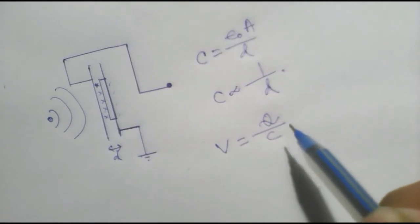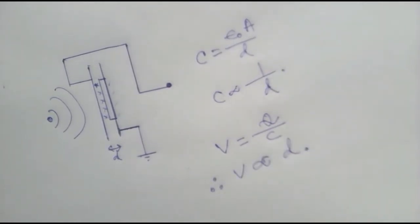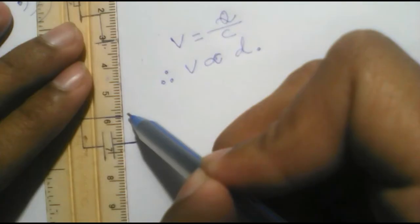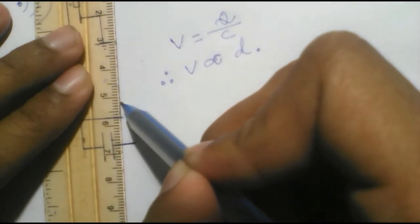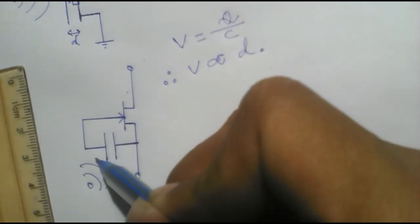As the charge in the system is constant, the voltage across the capacitor changes inversely with the capacitance. The voltage signal then gets amplified by a field effect transistor and we have an electric condenser microphone.